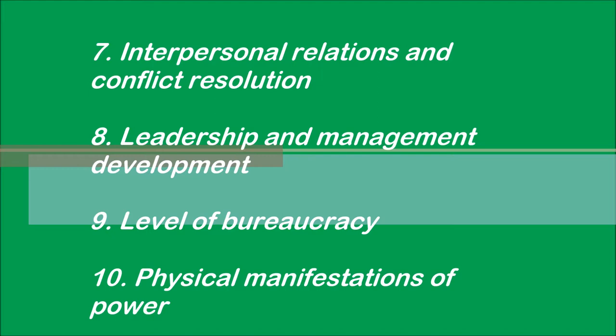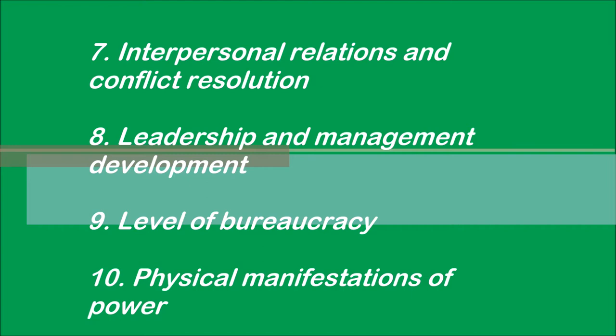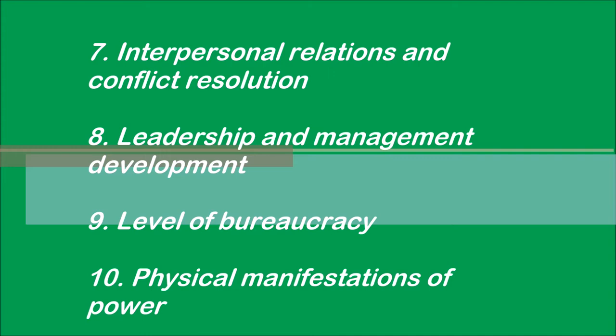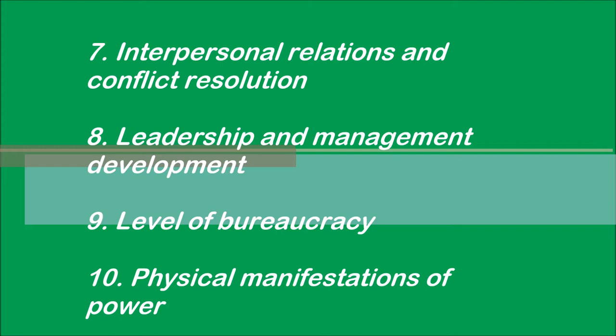The level of bureaucracy refers to how major operational and strategic decisions are made — for example, in terms of the number of layers of approval or the involvement of multiple committees in making decisions. Physical manifestations of power relates to the presence of special office accommodations or personnel areas, for example the executive gym, that indicate managers or employees of different levels of rank and influence in the organization.